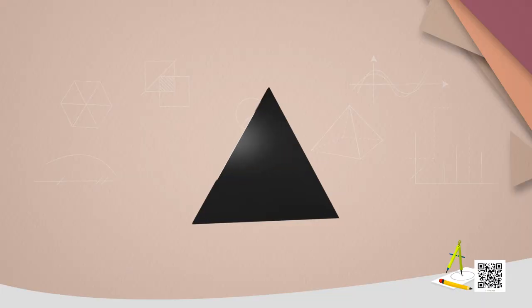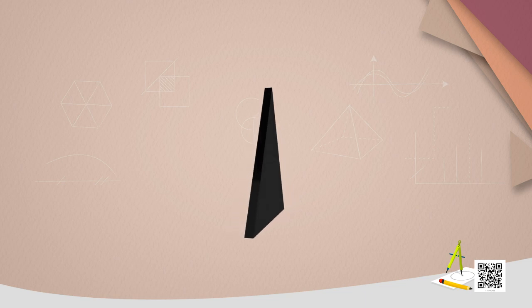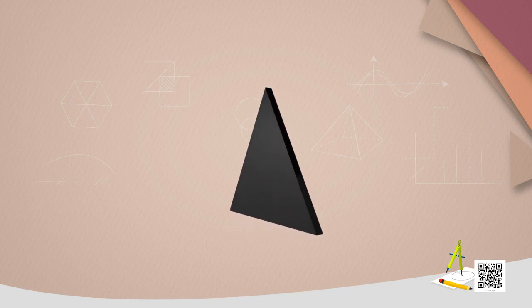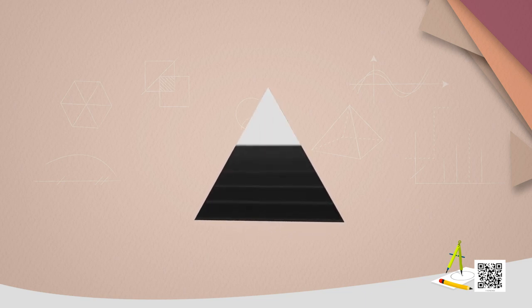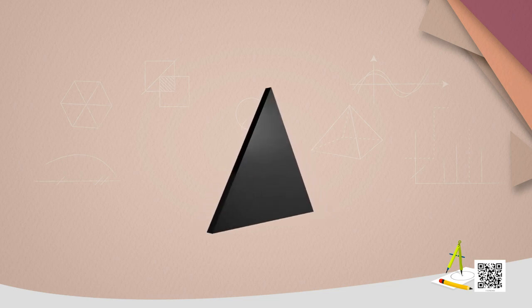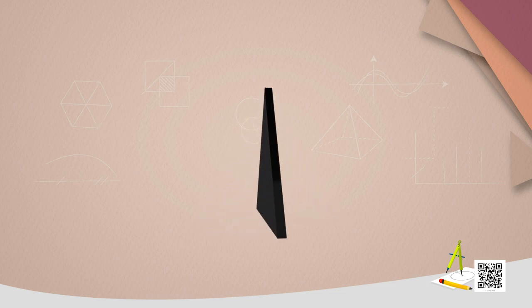As you all know, triangle has 6 parts, 3 angles and 3 sides. They are called 6 elements of triangle. If you know any of these 2 parts or elements, you can find rest of the elements.